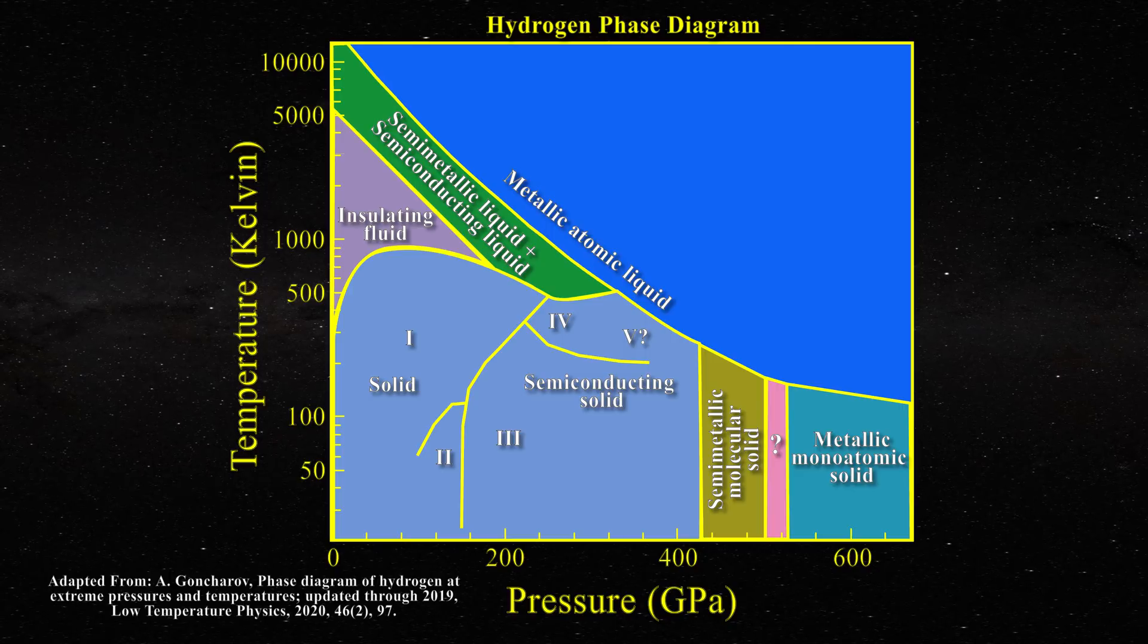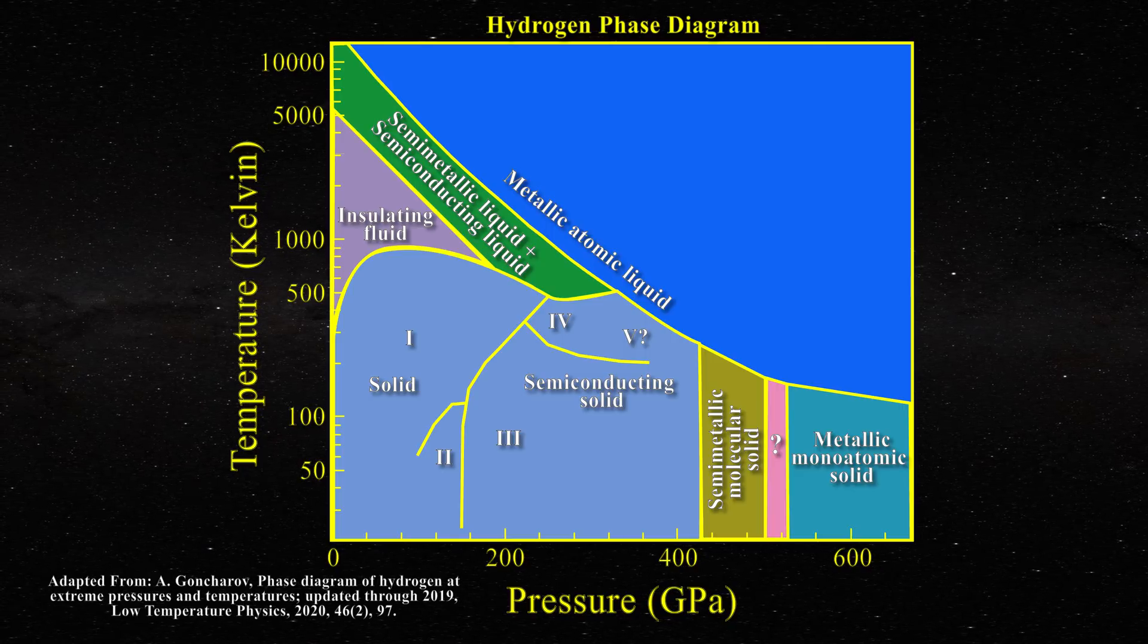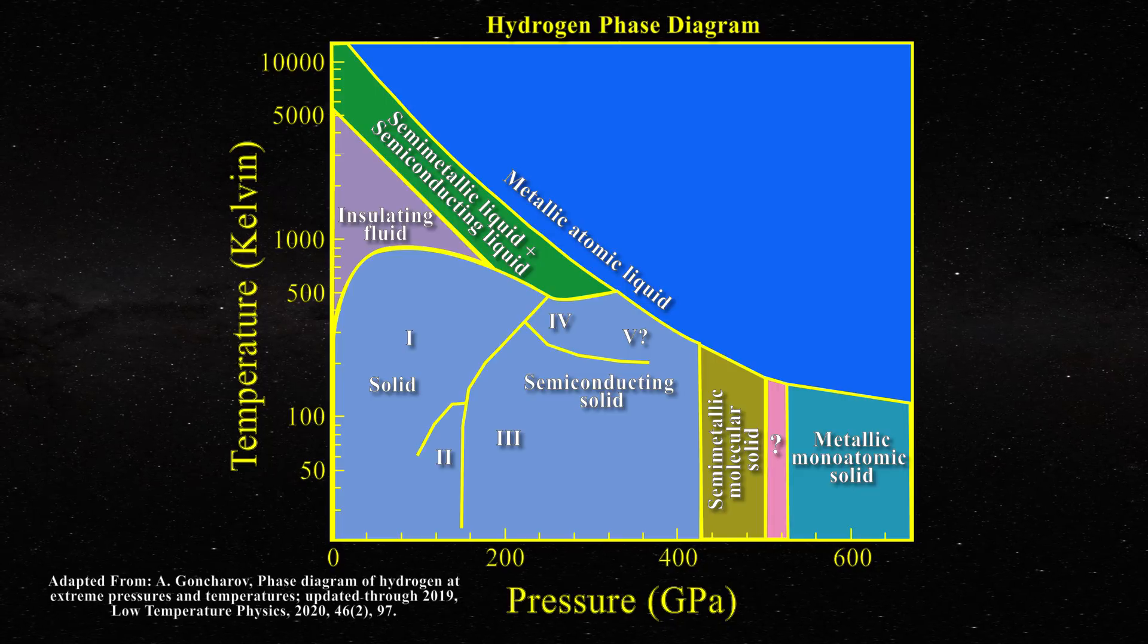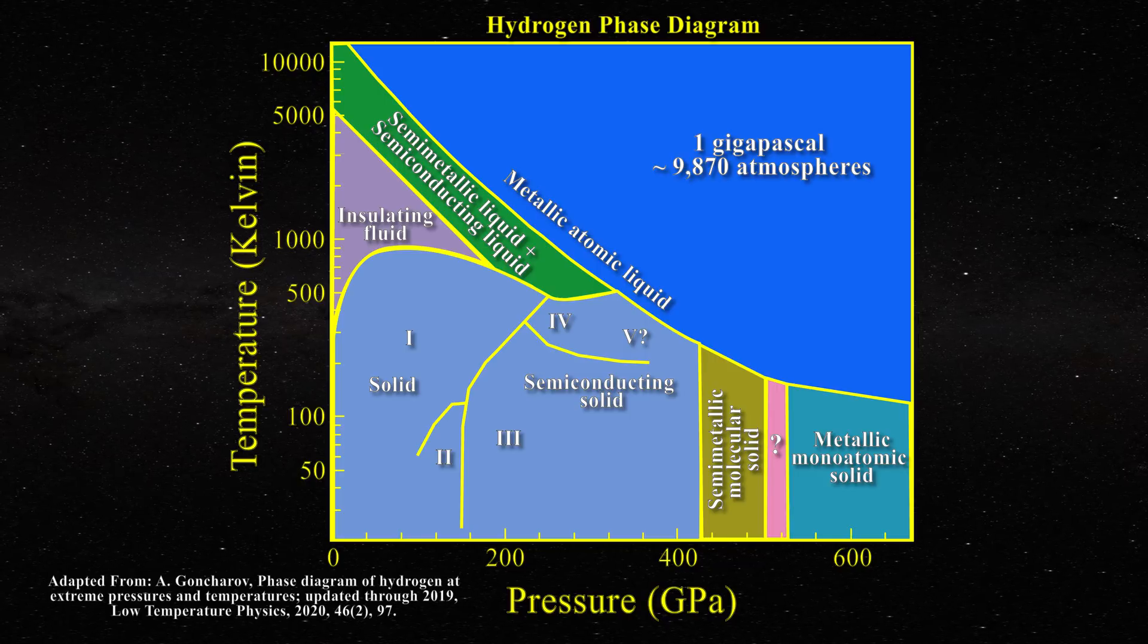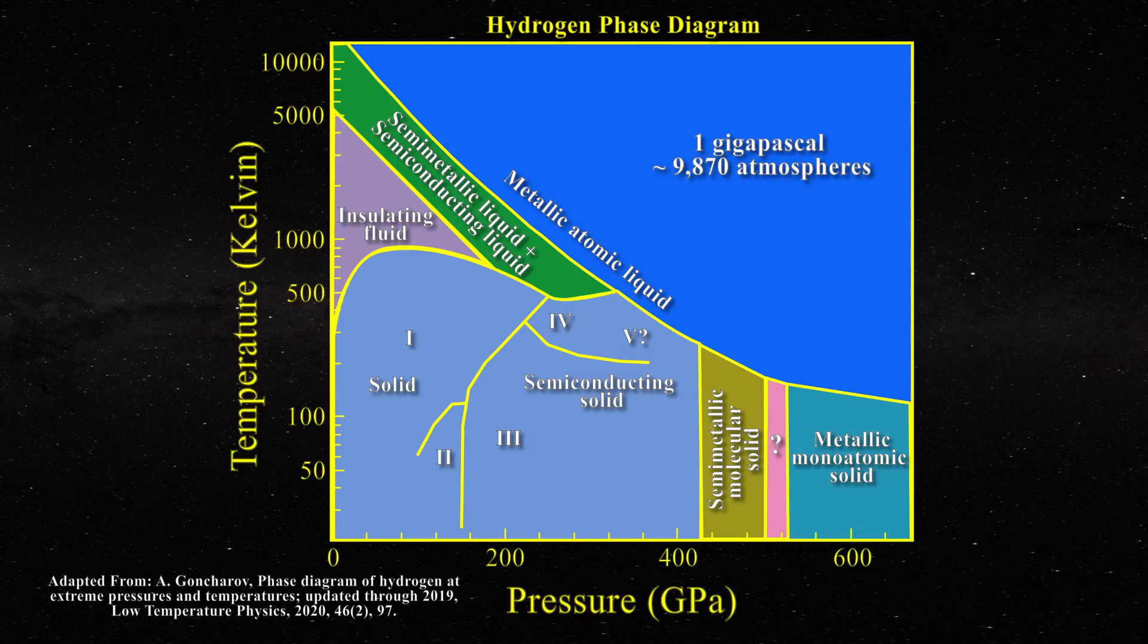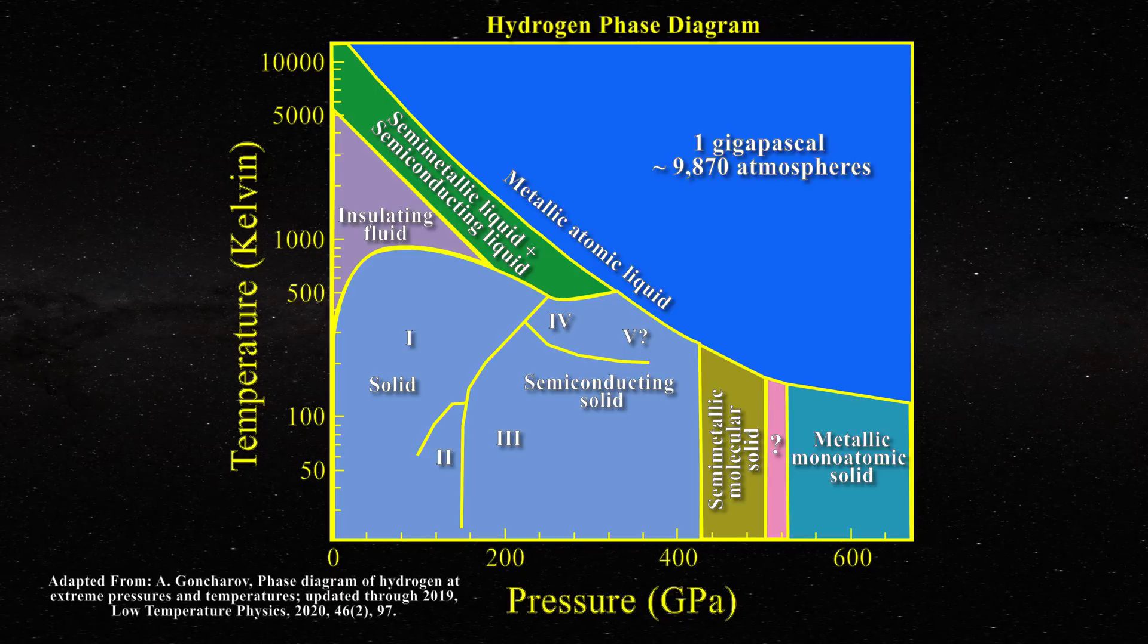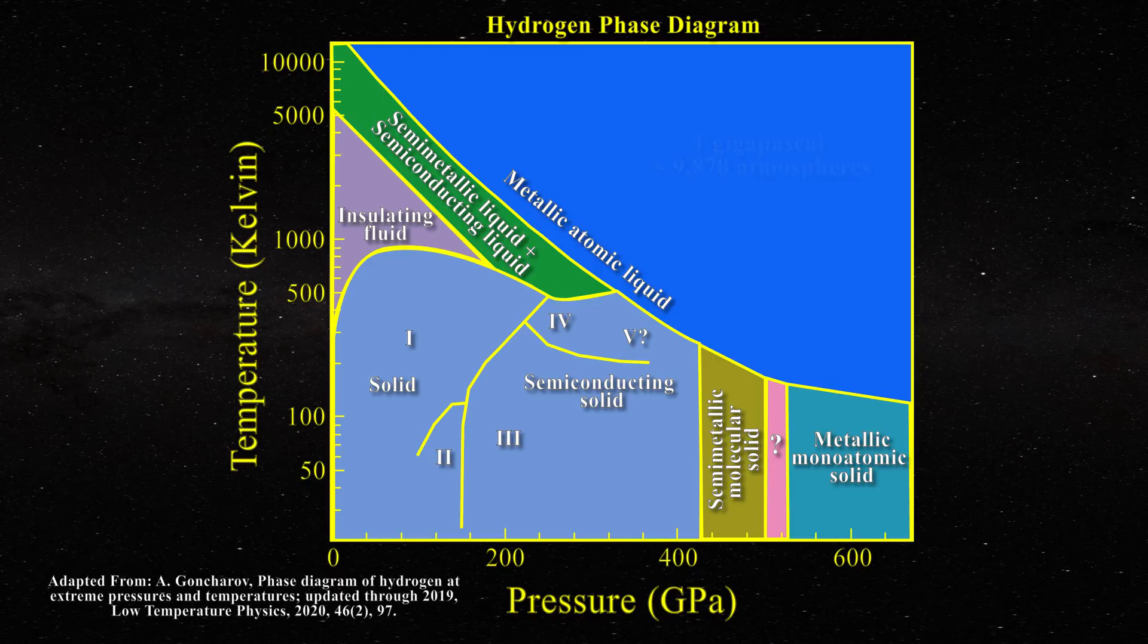The y-axis corresponds to the temperature in Kelvin and the x-axis to pressure in gigapascals. One gigapascal is equal to about 9870 atmospheres at sea level, so the x-axis on the graph is displaying tremendous pressures. I have removed all data points and kept only the major regions on the diagram in order to emphasize the key aspects of today's discussion.